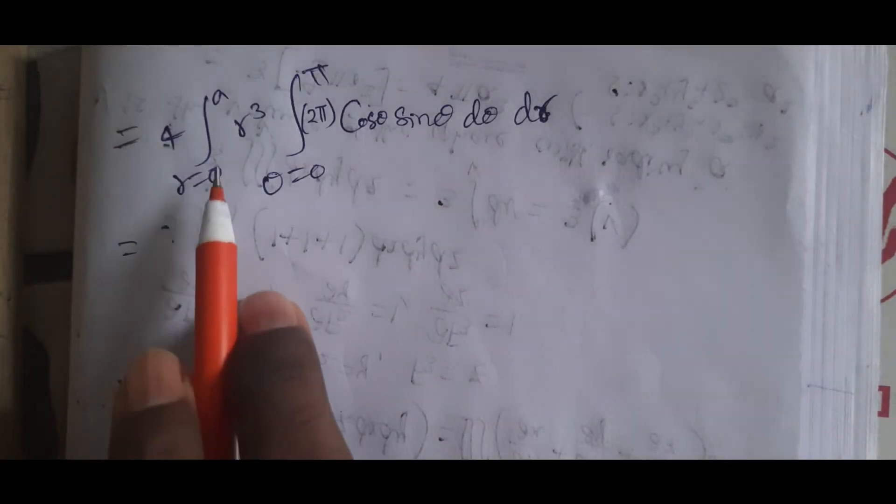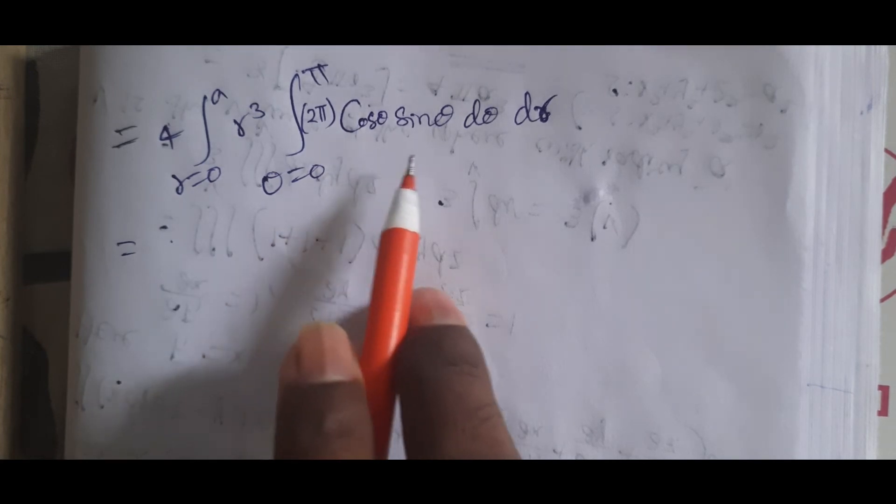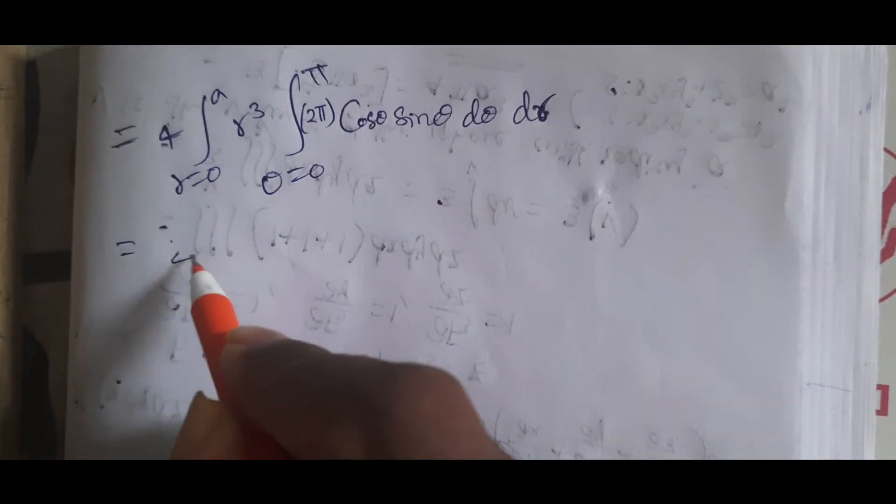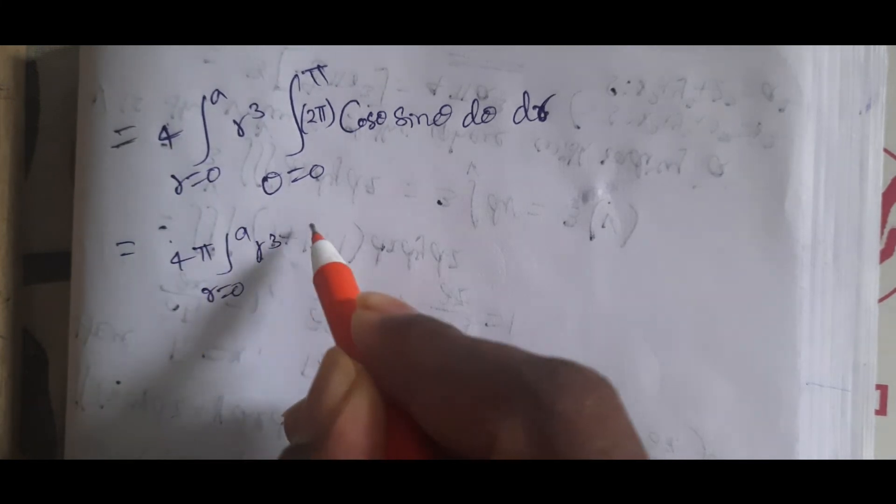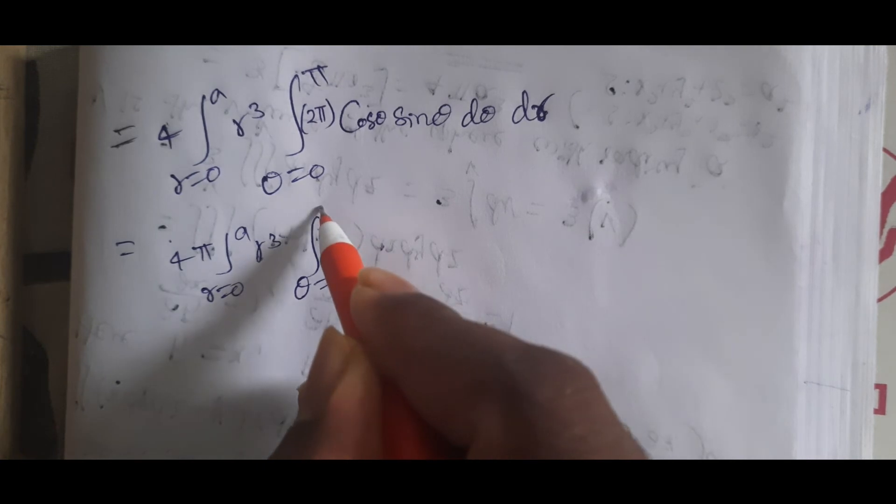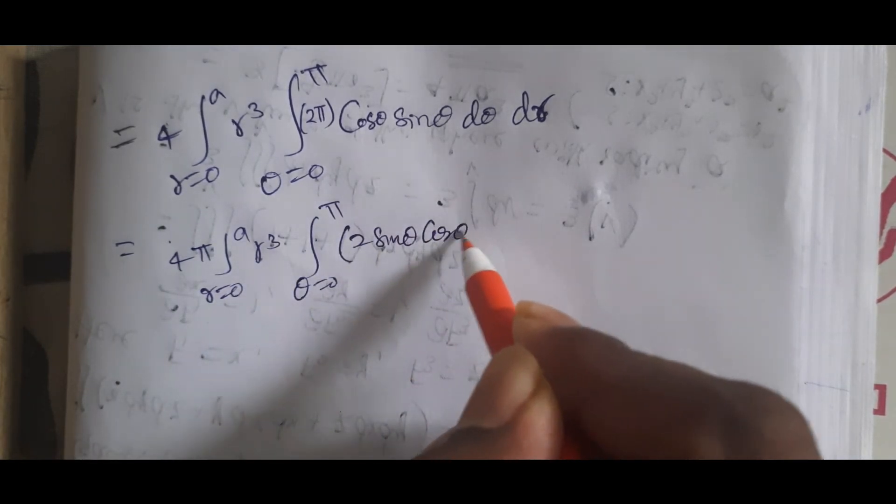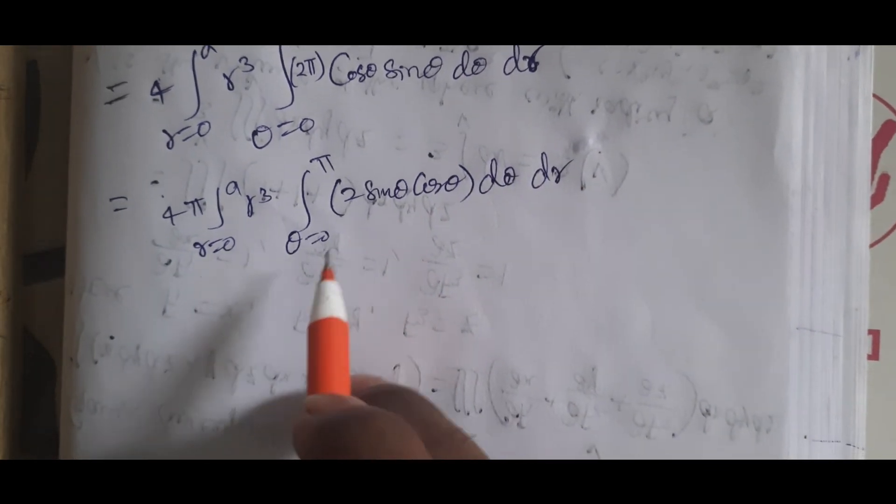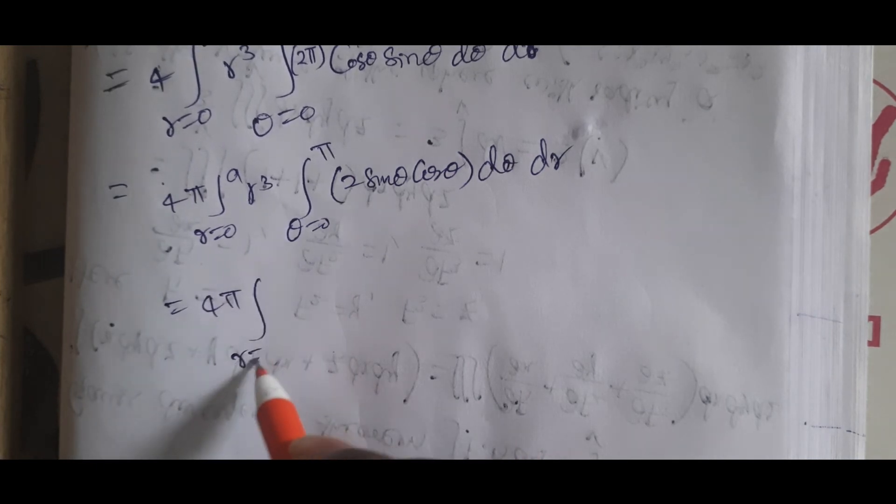Pi taken outside: 4π integral r = 0 to a, R³, theta = 0 to pi, 2 sin theta cos theta dtheta dr. Now 2 sin theta cos theta equals sine 2theta.